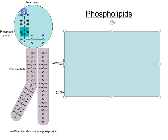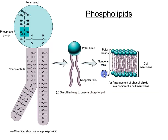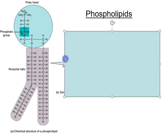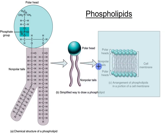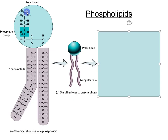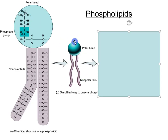We have a molecule where one end likes water and the other end doesn't like water. As a shorthand, we're going to draw it with a head and tails — one polar head and two non-polar tails. If you take a look at this and squint at it a little bit, it ends up looking like a lollipop shape.